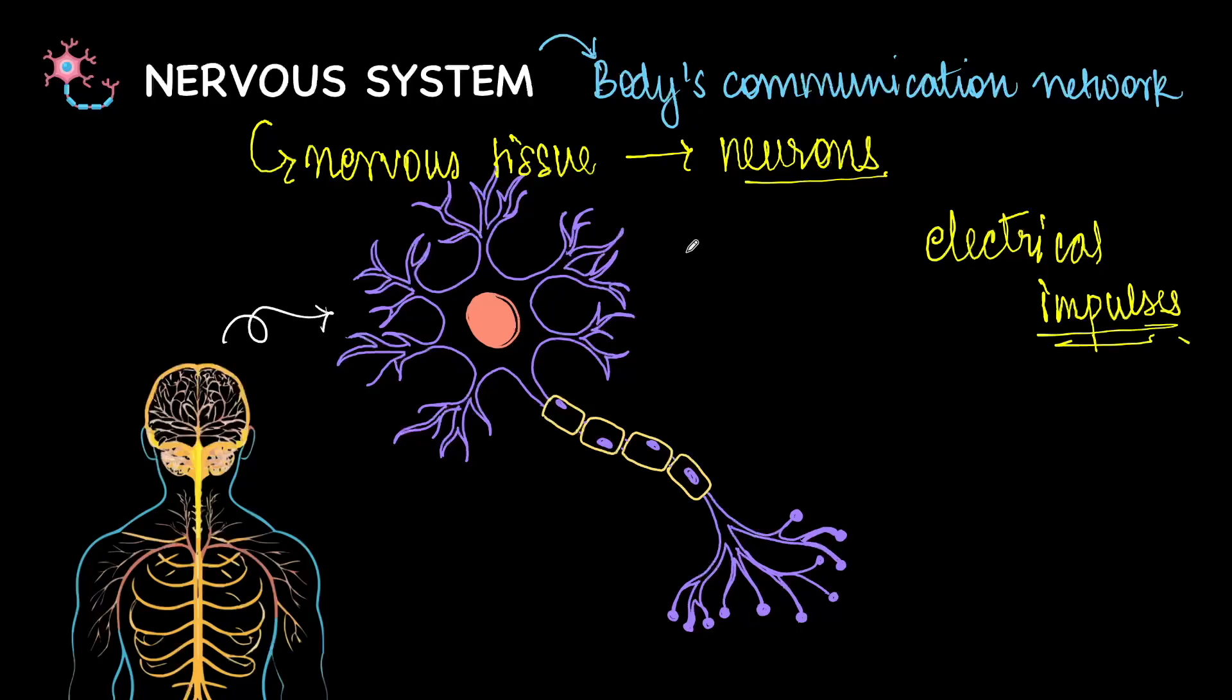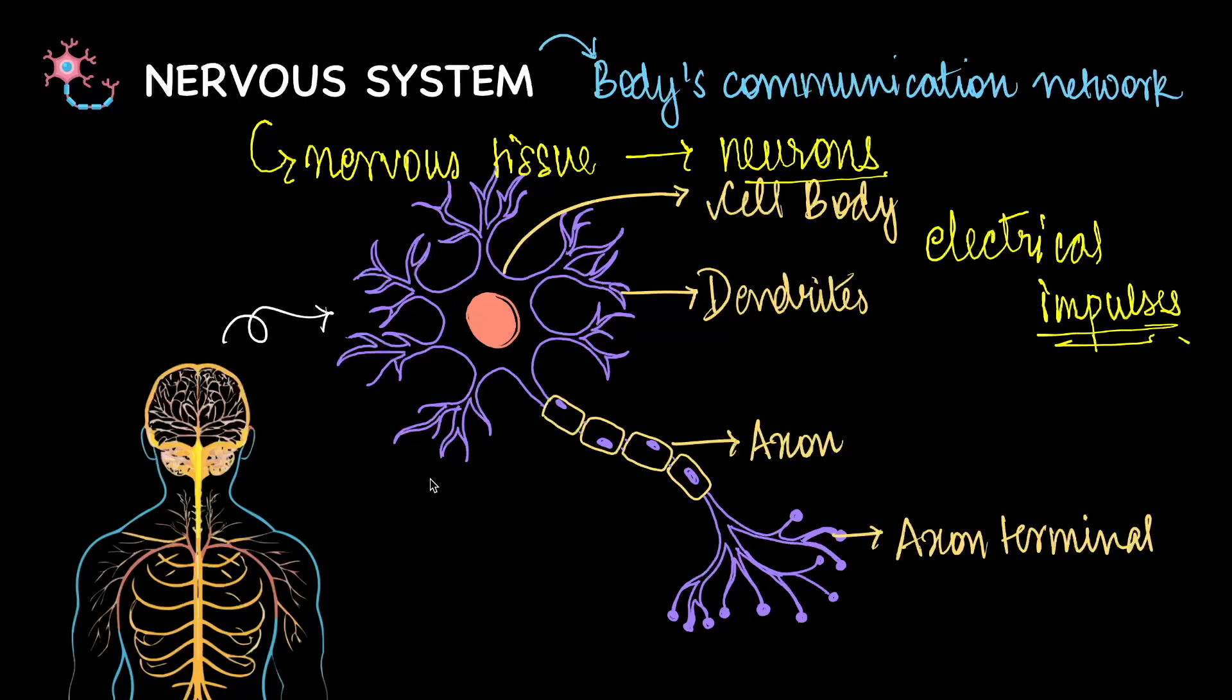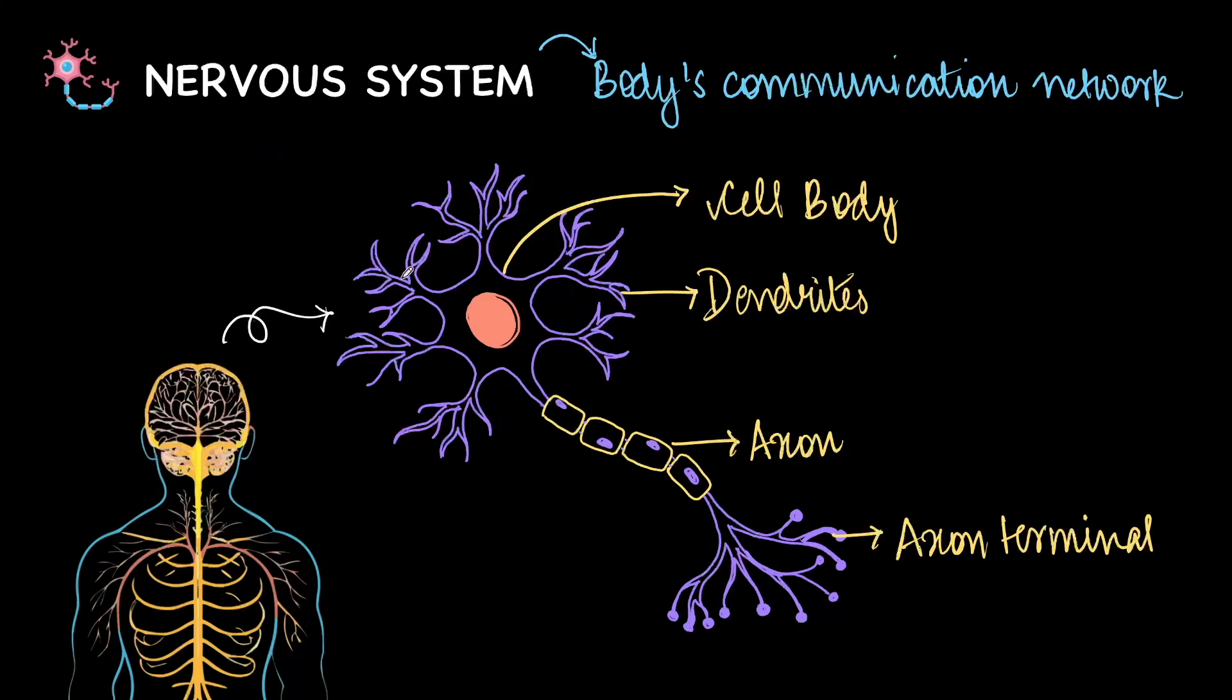So you could compare the neurons to electric wires that are there inside our houses. Now let's quickly recall the structure of the neuron. The neuron has a cell body from which these long pointy structures called dendrites arise that actually receive messages.